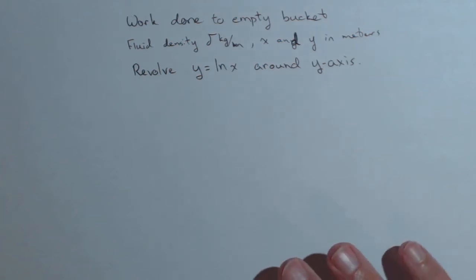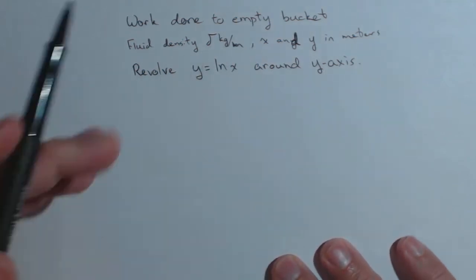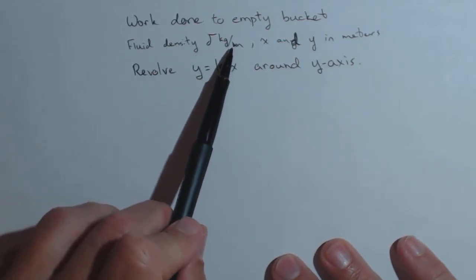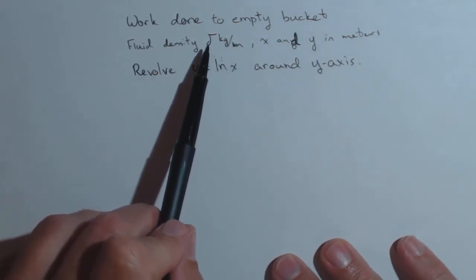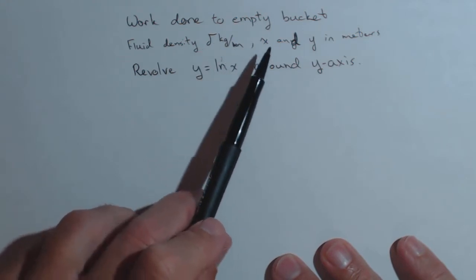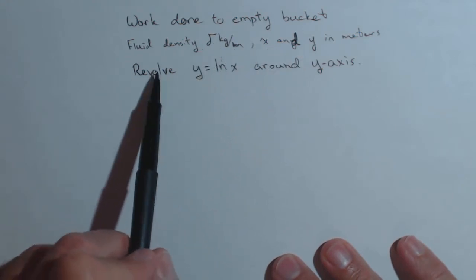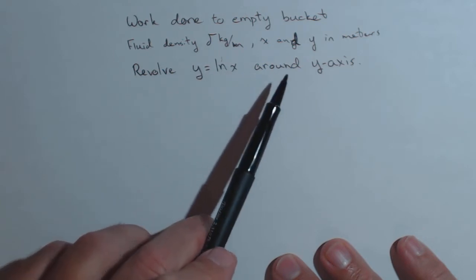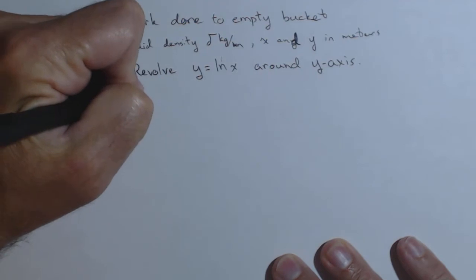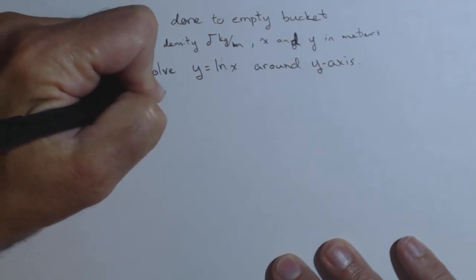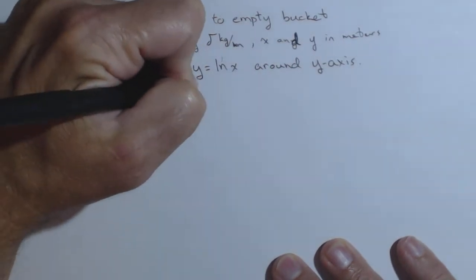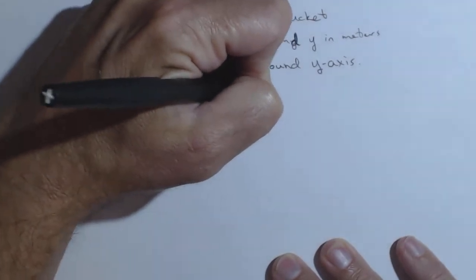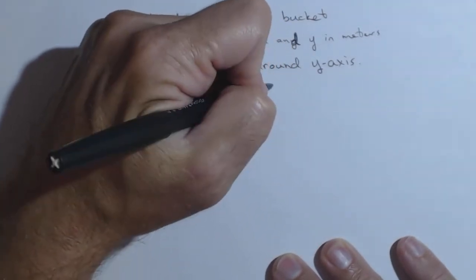Here we have a very cool problem. We're going to look at the work done to empty a bucket. It's got a fluid density of delta kilograms per meter, so whatever fluid you want to empty, you can insert your delta there. x and y are in meters. The bucket is created by revolving the graph of y=ln(x) around the y-axis, with bounds y=0 and y=2.